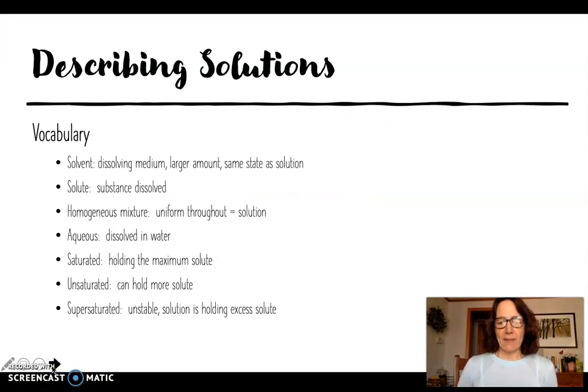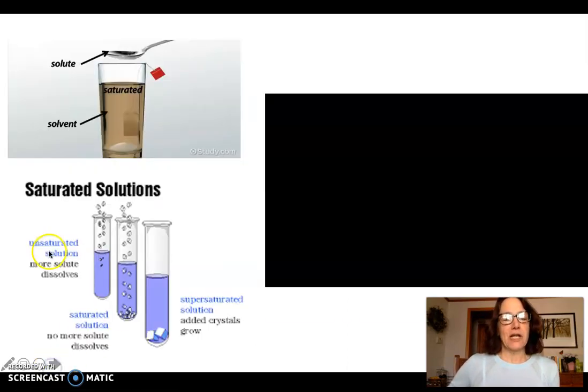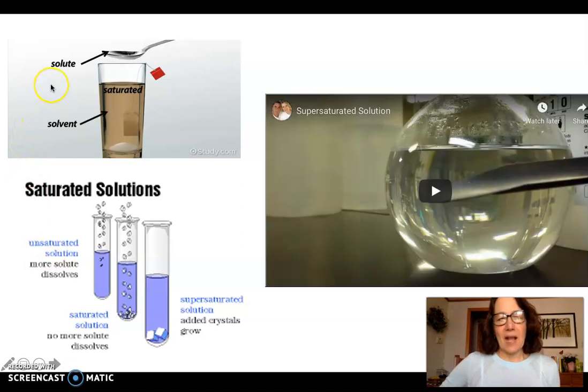A little vocabulary to get started with. When I have a solution, I can have two liquids that are soluble in one another. Here's a glass of tea, my solute is the sugar, my solvent is the thing doing the dissolving and this solution is saturated.